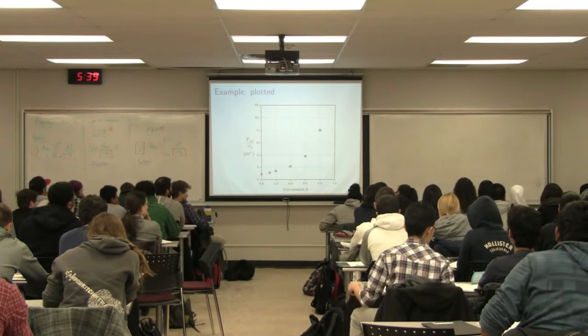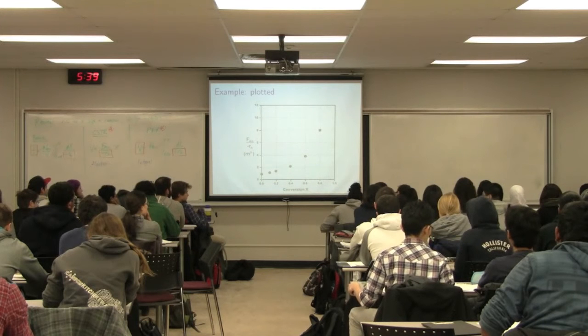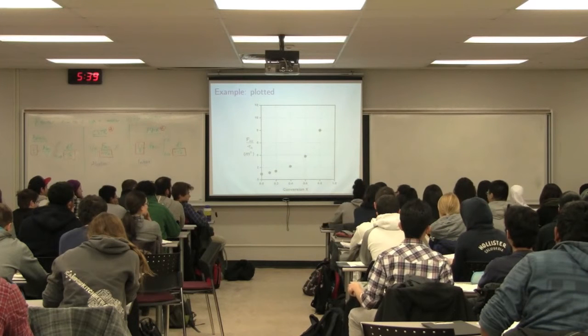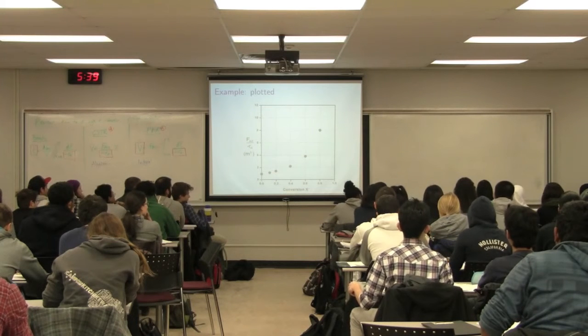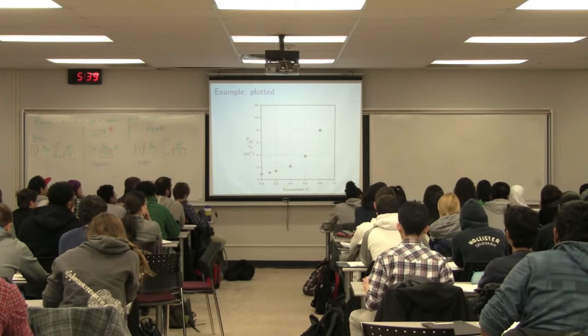So we go to our lab and we capture values of X and minus RA. We have no idea for these systems what the true rate expression is. So when we collect this data, we don't know whether this is necessarily a first-order system.